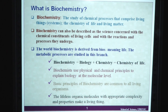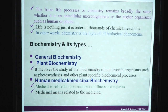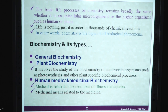Biochemists use physical and chemical principles to explain biology at the molecular level. Basic principles of biochemistry are common to all living organisms, whether plant systems or animal systems. The lifeless organic molecule with appropriate complexity and properties makes a living system. The basic life processes or chemistry remains broadly the same, whether it is a unicellular microorganism or higher multicellular organisms — human or plants. Life is nothing but an order of thousands of different chemical reactions which occur in tissues, organelles and biosystems. In other words, chemistry is the logic of all different types of biological processes or phenomena.